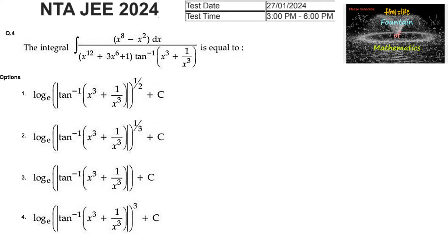Here let us substitute: tan inverse of (x power 3 plus 1 by x power 3) is equal to t. Now differentiating with respect to x,